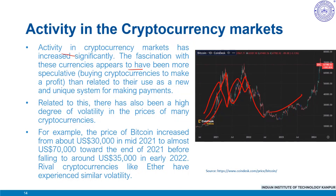Buying cryptocurrencies to make a profit for speculative reasons rather than for any fundamental asset reason is more the case than using them as a new system of making payments. There has also been a high degree of volatility in prices of many cryptocurrencies. For example, the price of Bitcoin increased from about $30,000 in mid-2021 to almost $70,000 by end of 2021, then falling to around $35,000 in early 2022. This extraordinary interest has also seen a growing amount of computing power used to solve complex codes.